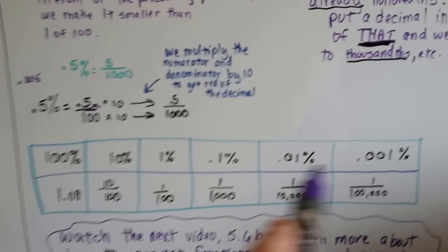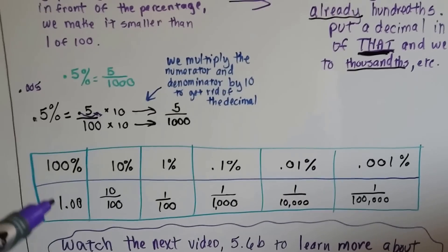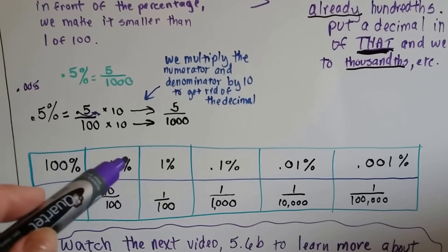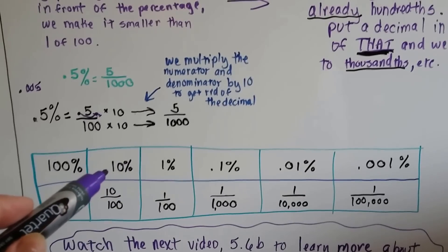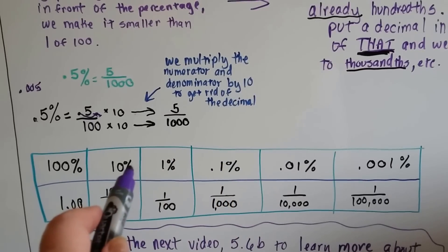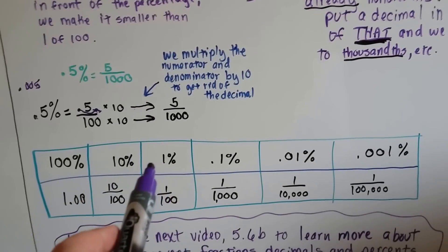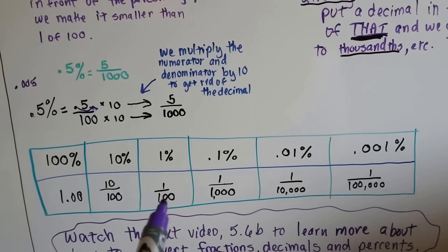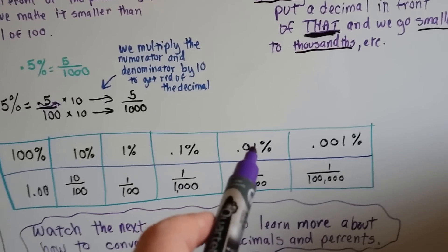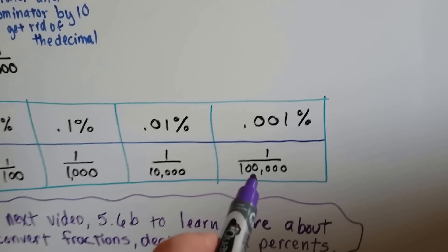Here's a summary to see what these look like. One hundred percent is one whole. Ten percent is ten of a hundred — think of the percentage sign as another way of having a decimal point there. One percent means one of a hundred. Point one percent means one thousandth. Point zero one percent means one ten-thousandth. Point zero zero one percent means one hundred-thousandth.